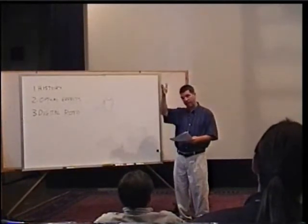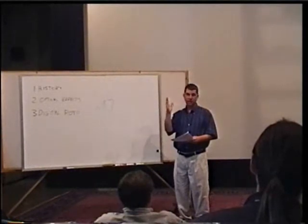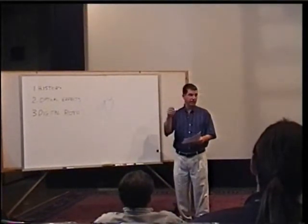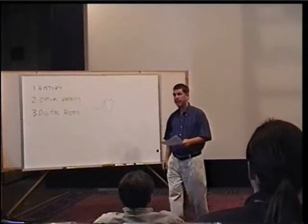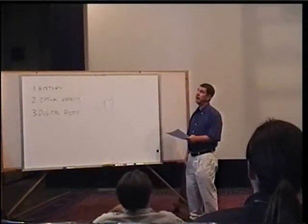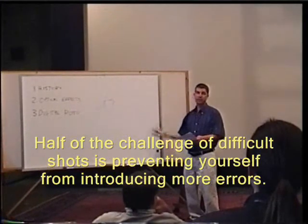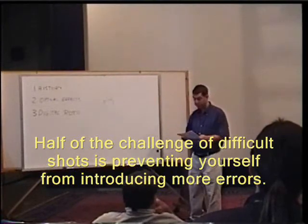Because you will, particularly if you have objects that are man-made with straight edges, it's very easy to get this kind of wobbling, and that's introduced just by the fact that you're touching the system. And on the really complicated shots, half of the difficulty is not just masking the shot, it's preventing yourself from introducing the error that you have to take out again.